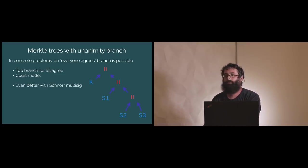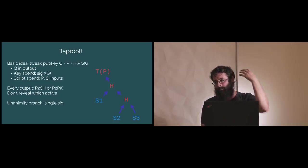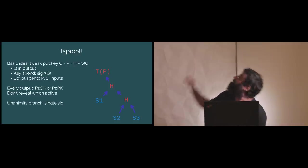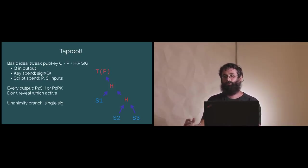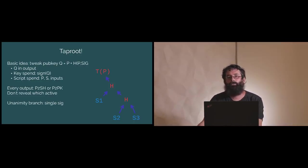However, if you think about the scenario, we want everyone to agree generally. Still, what we have to publish on the chain is our key and the top-right branch hash — an additional 64 bytes that need to be revealed just for this super-common case. So can we do better? That is where Taproot comes in.